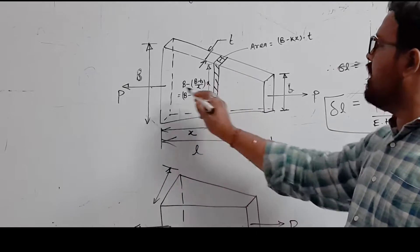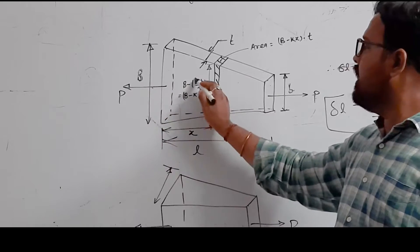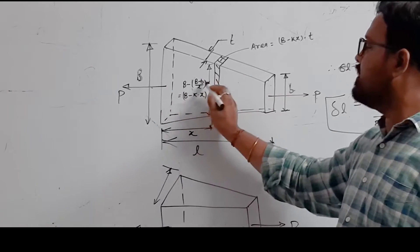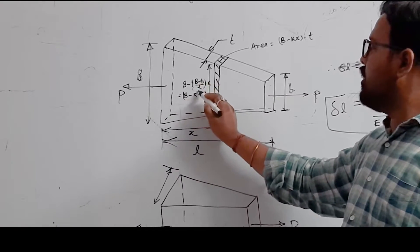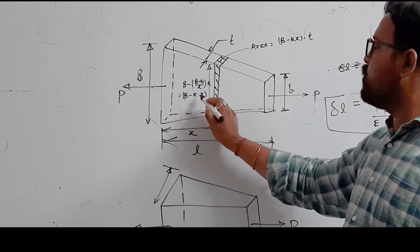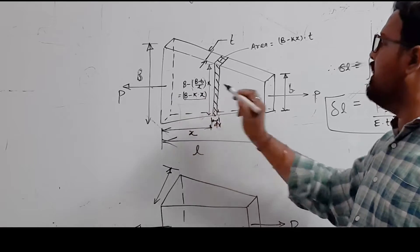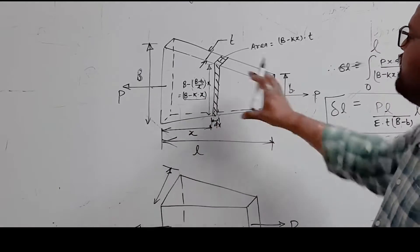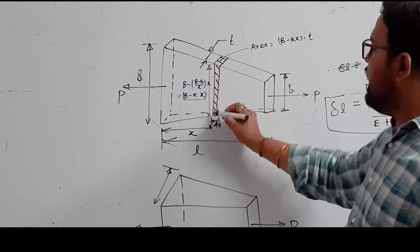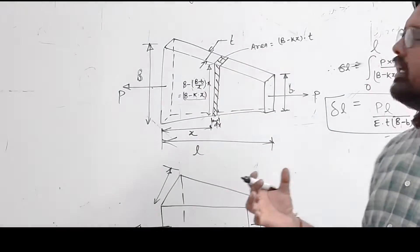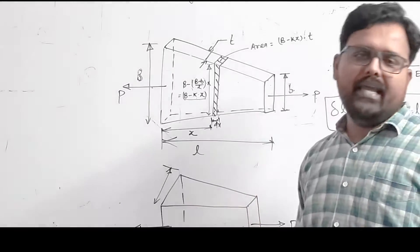Finally, the width at distance x is B minus (B minus b by L) times x. So the width varies linearly based on position.